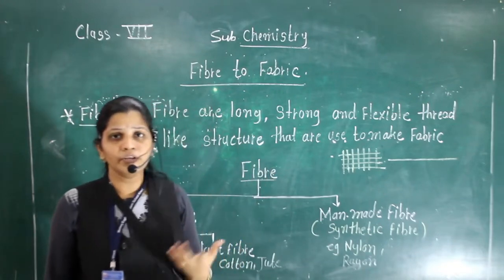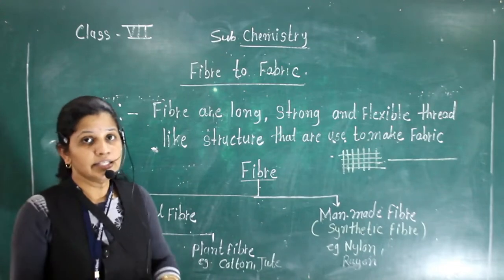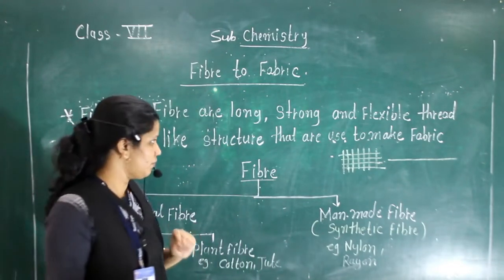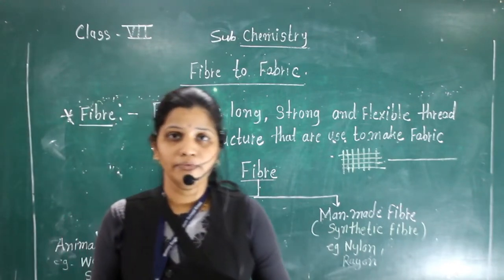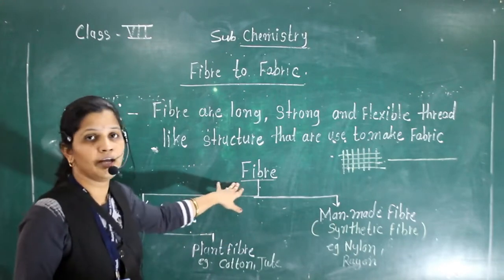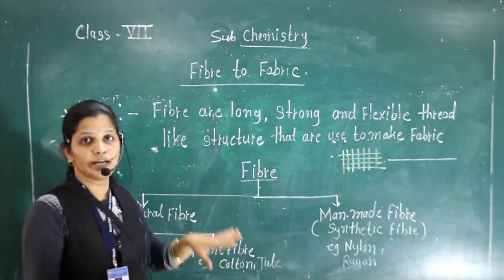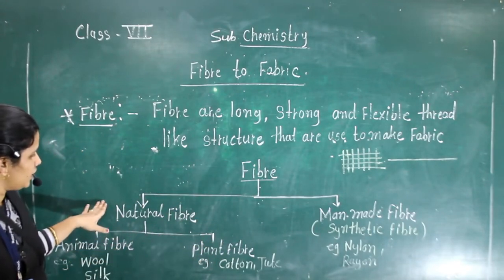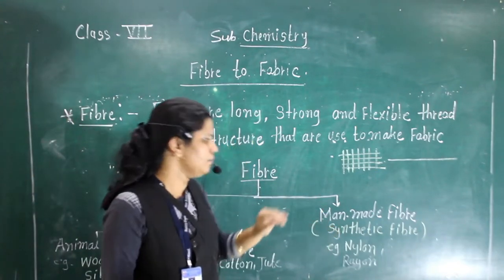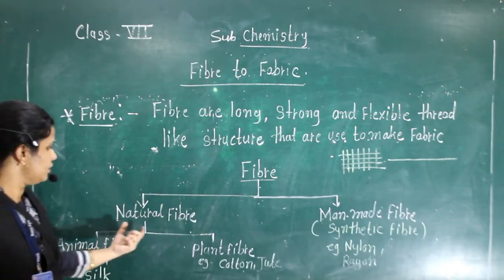Now, what is the source of fiber and from where we are making the fiber? Since the third class, we have learned about the fiber, what are the sources, how we are making the fiber. First we will see about the fibers. There are two types of fibers, which are classified into two types. First one is natural fiber and second one is man-made fiber.